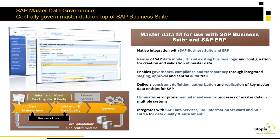MDG enables standard governance, compliance, and transparency through integrated staging, approval, and central audit processes. MDG provides a staging area — while data goes through an approval process it tracks everything in a central audit trail. Until a record is approved, it is not physically entered into your ECC table structures. It delivers consistent master data definitions with authorizations, roles, and replication of key master data entities across SAP systems, eliminating error-prone manual maintenance.